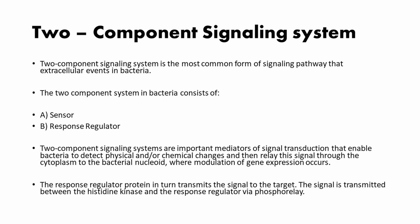So what is two-component signaling system? The two-component signaling system is the most common form of signaling pathway that responds to extracellular events in bacteria and in plants. The canonical two-component system in bacteria consists of a sensor — an autophosphorylating histidine kinase — and a response regulator, which transfers the phosphate from the sensor kinase to a conserved aspartate within the same domain.